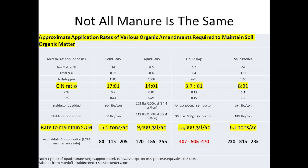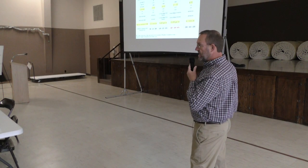Looking at hog manure with a 3.7 to 1 ratio, you'd need to put on 23,000 gallons per acre to maintain your soil organic matter level — which is not reasonable. Typically, 3,000 to 5,000 gallons per acre is what you'd apply from a hog finishing barn to meet crop nutrient requirements. At that 23,000-gallon rate, you'd be putting on 400 pounds of nitrogen and 500 pounds of phosphorus, which would raise the soil test level 25 parts per million in one application.